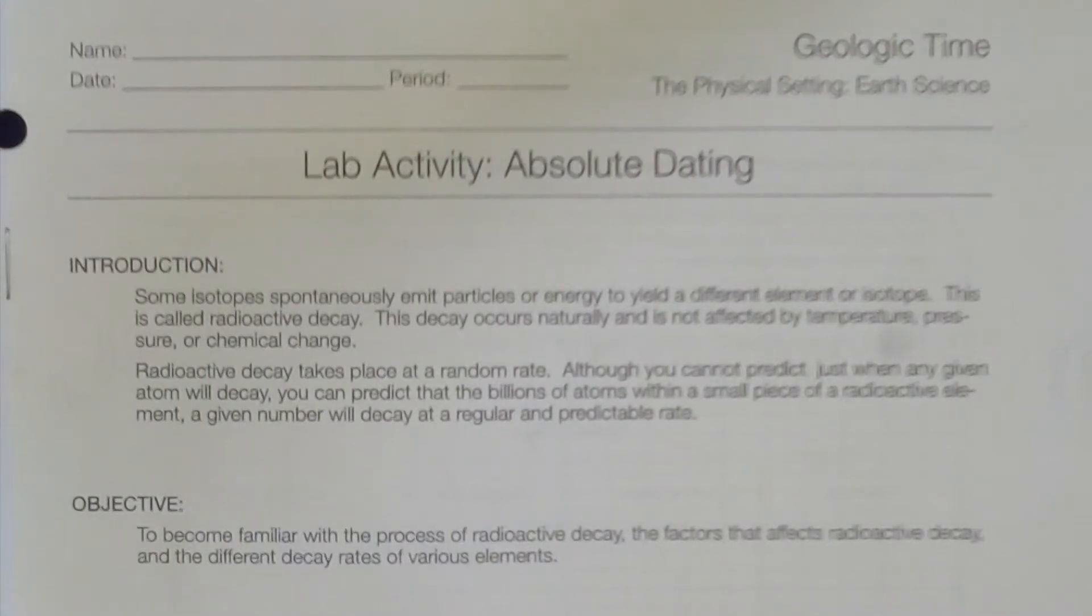Radioactive decay takes place at a random rate. Although you cannot predict just when any given atom will decay, you can predict that a number of billions of atoms within a small piece of radioactive element will decay at a regular and predictable rate. This lab's objective is to become familiar with the process of radioactive decay, the factors that affect radioactive decay, and the different decay rates of various elements.